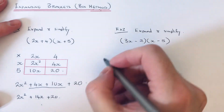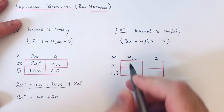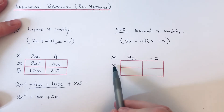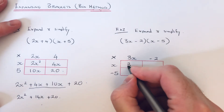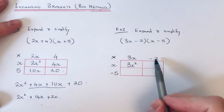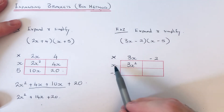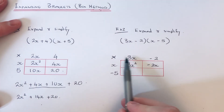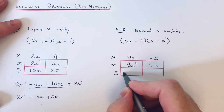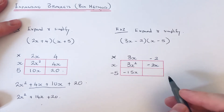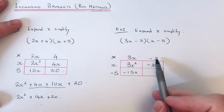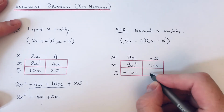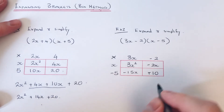Multiply the number at the top by the number on the side for each box. So 3x times x is 3x squared. Minus 2 times x is minus 2x. Then 3x times minus 5 is minus 15x. For the final box, minus 2 times minus 5 — when you multiply two negatives it becomes positive — so that's plus 10.